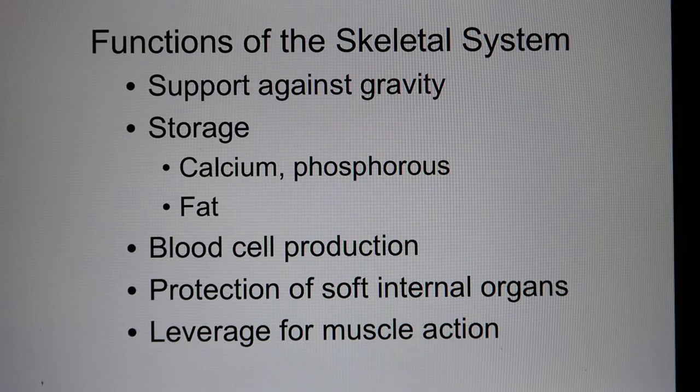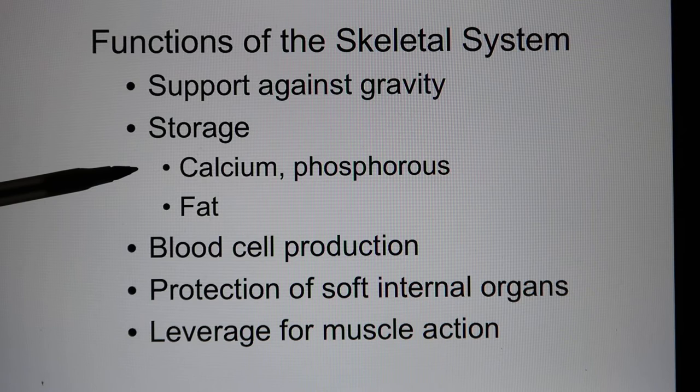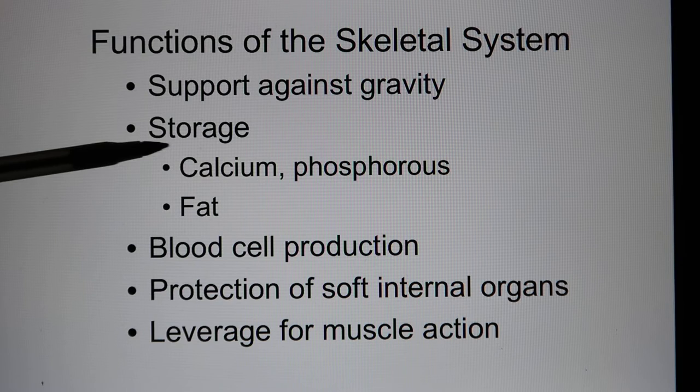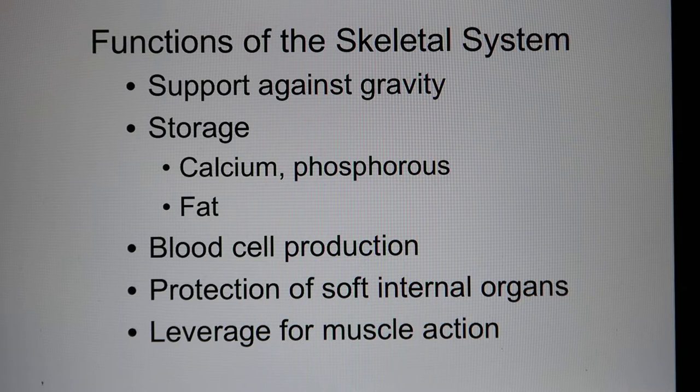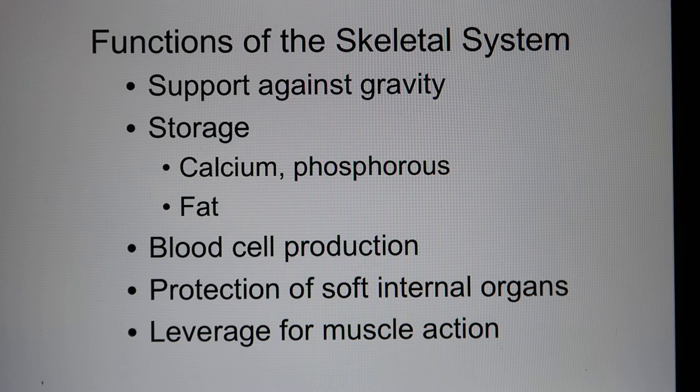Now let's look at the bone. The bone's functions include support against gravity and storage. You have calcium in the bone matrix, mainly calcium phosphate. In the bone marrow, you have yellow bone marrow, which is where fat is stored. You also have red bone marrow, which is for blood synthesis — it produces blood cells. Bones also provide protection and leverage function.